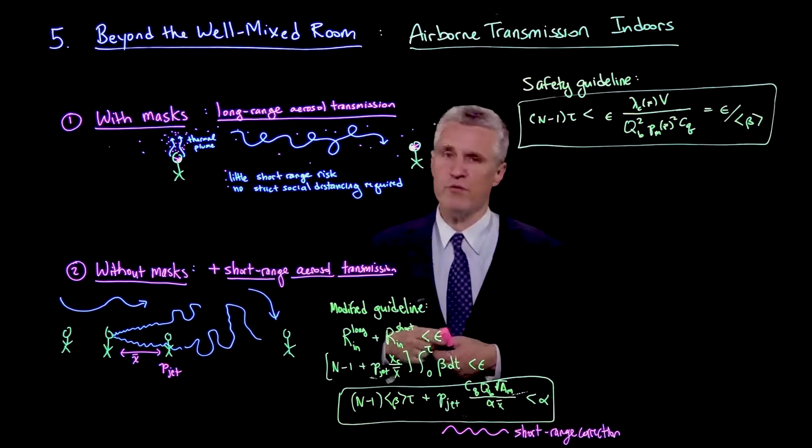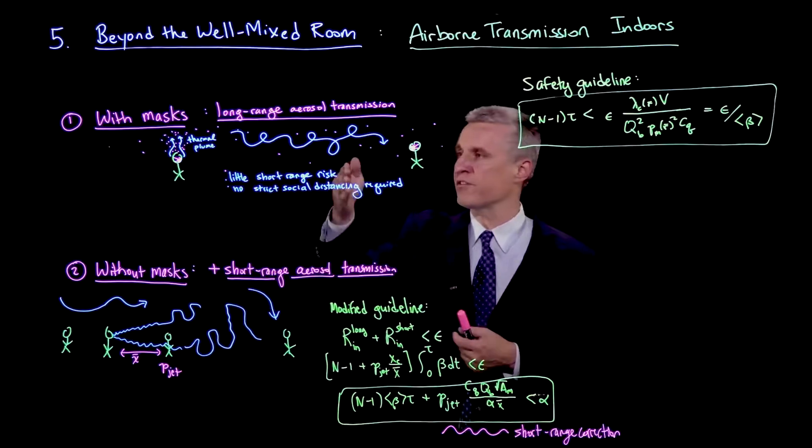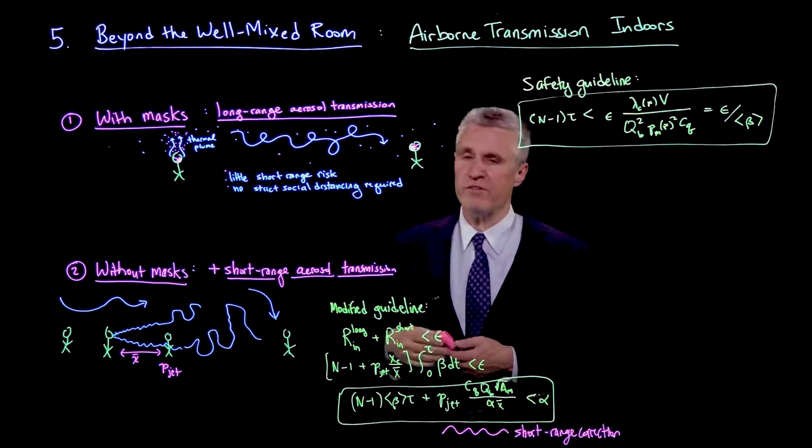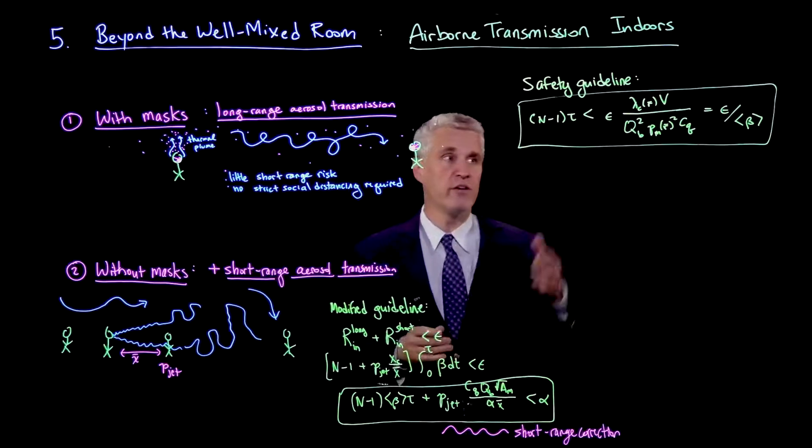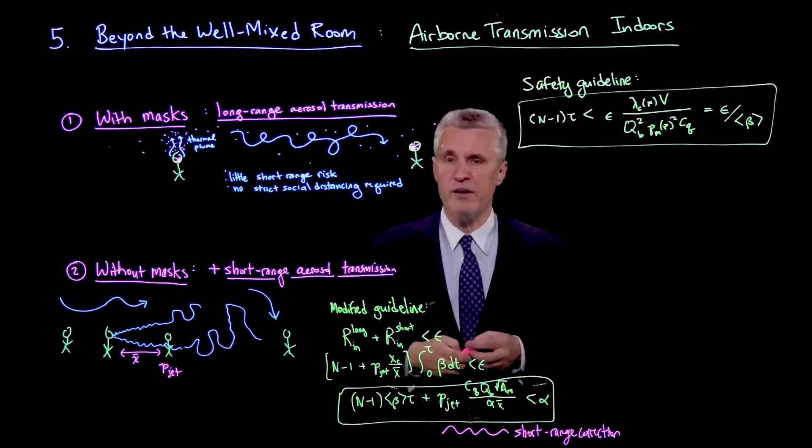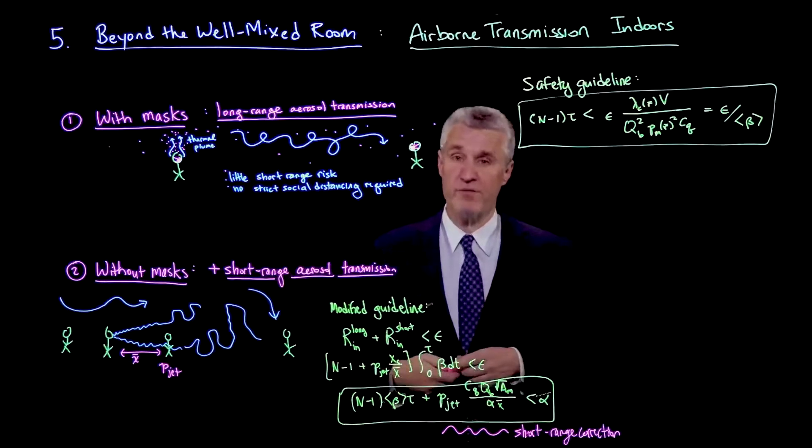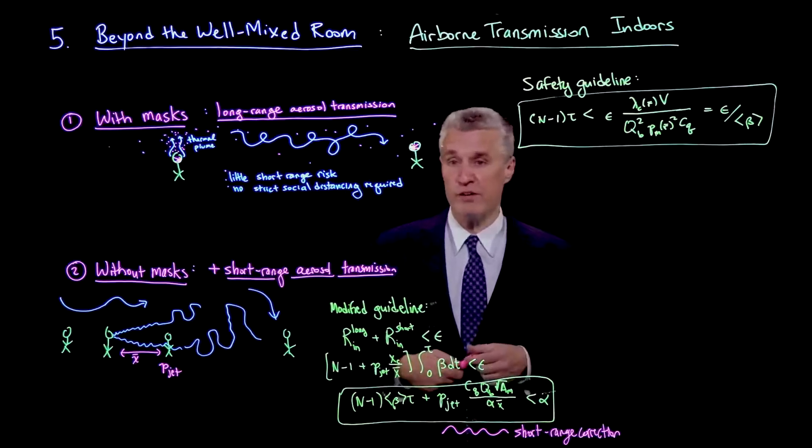So I would argue that no strict social distancing is required in a mask situation. So whether we're six feet or three feet, it's not going to give us substantially more safety if people are wearing masks. And instead, we should pay much more attention to the formula that I boxed here, which gives you an estimate of the long-range transmission risk airborne, which is equally there for everyone in the room. And that must be considered for safety and also for contact tracing.